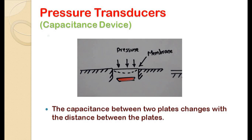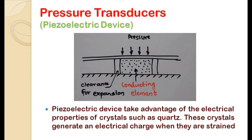The last type of electrical transducer is the piezoelectric transducer. Piezoelectric devices take advantage of the electrical properties of crystals such as quartz — these crystals generate an electrical charge when they are strained. The crystals are arranged in a conducting element, and the unknown pressure is allowed to strain this conducting element. The charge generated is proportional to the strain caused by the applied pressure, allowing us to measure it using piezoelectric devices.